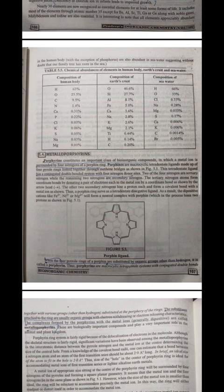This tetradentate ligand has a conjugated double-bonded system with nitrogen donor sites. Two of the four nitrogens are tertiary nitrogen while the remaining two are secondary nitrogen. The tertiary nitrogen atoms form coordinate bonds by donating a pair of electrons each to the metal ion. The other two secondary nitrogens lose a proton each and form covalent bonds with the metal ion. Thus, a porphyrin ring serves as a tetradentate dinegative ligand.